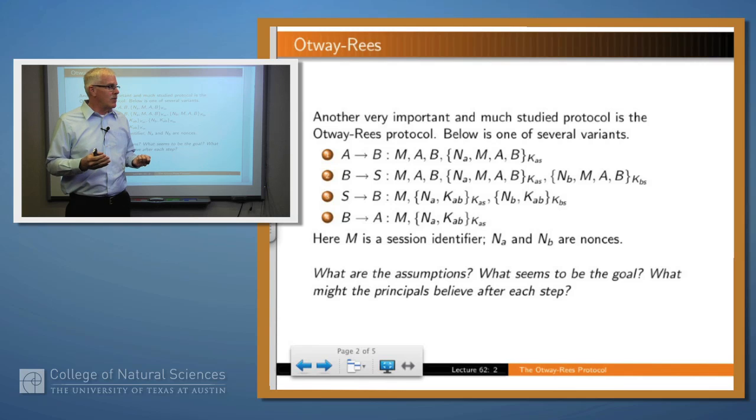The encrypted pieces contain nonces from A and from B that S can then return in the response so that A and B will know that these are fresh. So what happens? S generates a new key K_AB